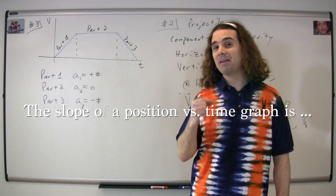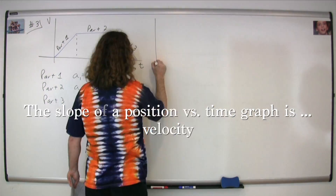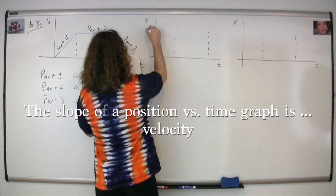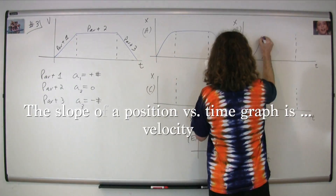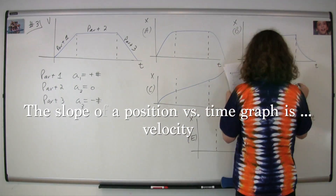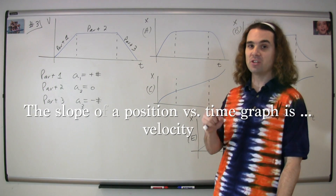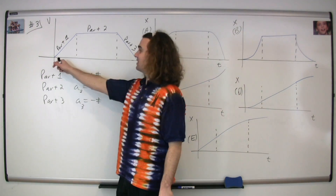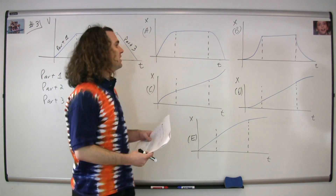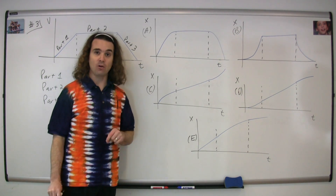What is the slope of a position versus time graph? Velocity. So we're going to use that simple fact that the slope of a position versus time graph is velocity. We're going to look at the initial velocity. The initial velocity is equal to zero, therefore the initial slope of our position versus time graph should be zero — it should be a horizontal line.